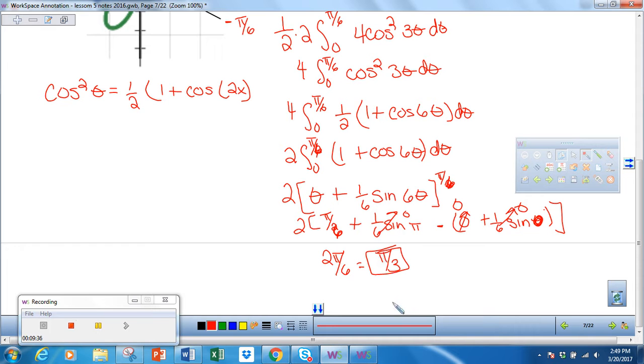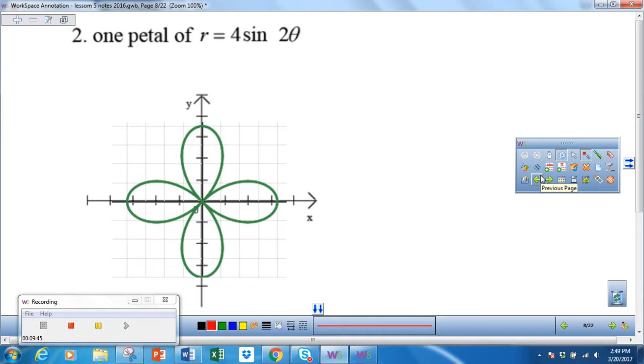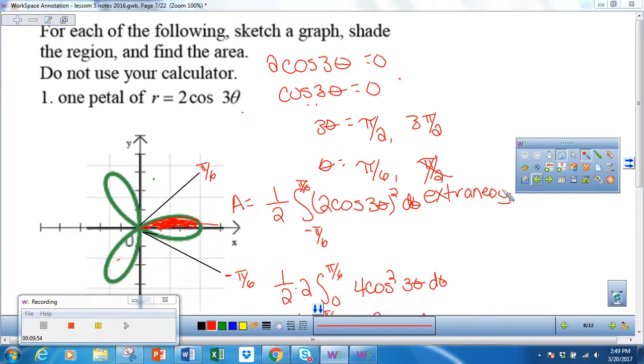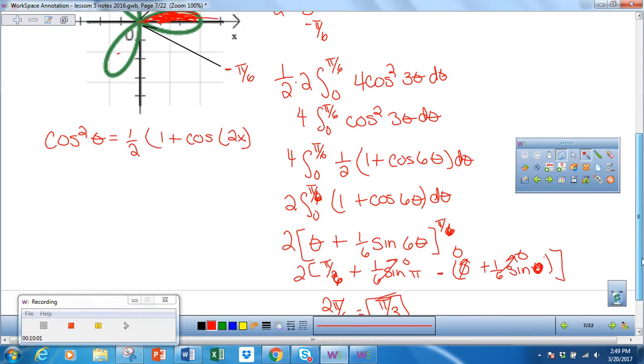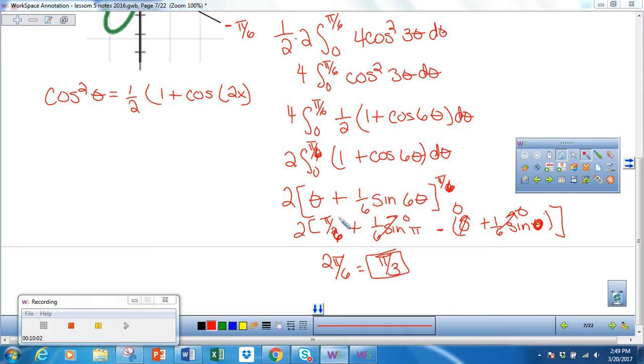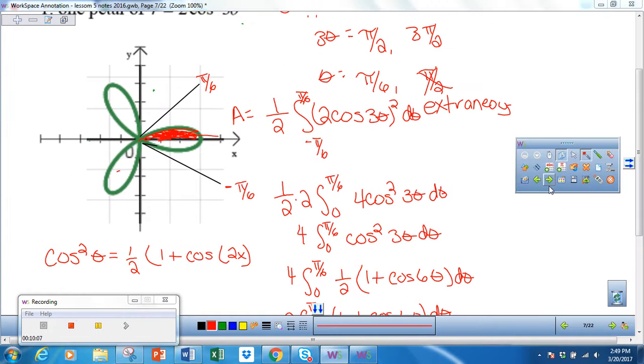It's not too bad. We just had to remember some pre-calc and how to take the integral of a function using substitution. This one is similar to the one we just did. We're just finding one petal. On the one we did a second ago, when we got π/3, if we wanted to find the area of the entire thing, we would multiply π/3 times three. So the area of the entire region, all three petals, would be π.